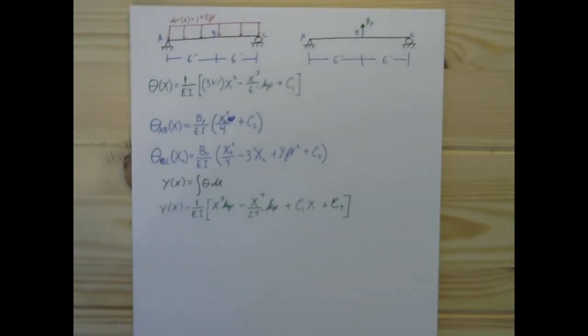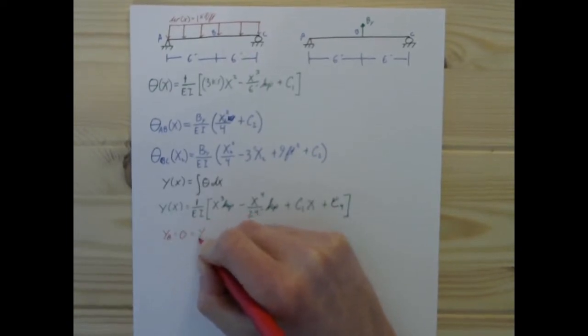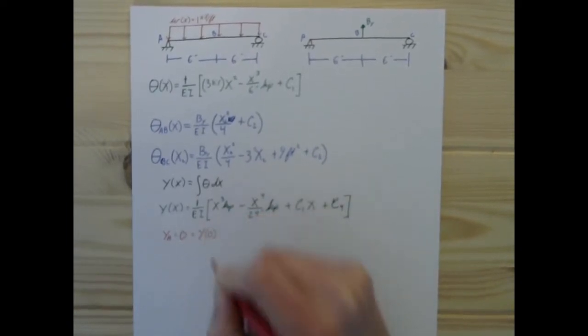So when we look at this, we can immediately start getting rid of our constants of integration. The deflection of point A has to be 0, and that's just going to be C4, right? So C4 is 0. Get rid of it.